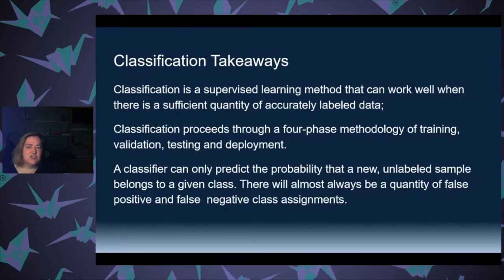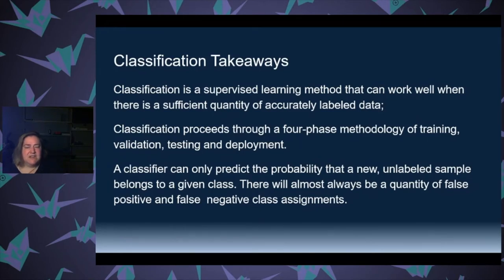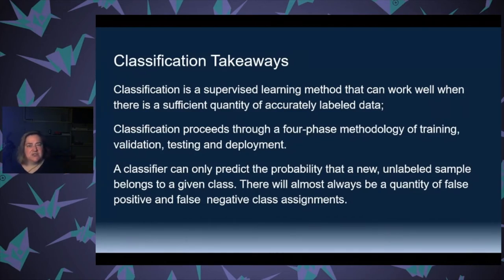Classification takeaways: classification is a supervised learning model. It works pretty well when you have enough accurately labeled data, but that in itself could be a challenge — who's going to come up with all that accurately labeled data? Very often with classification, you separate your data into training and testing data. You make sure your training data is correct, plug in your testing data, and if it works, you deploy it. Classification is not an absolute yes or no — it's asking what is the probability that a new unlabeled sample belongs to a class, so you have to decide what your thresholds are.